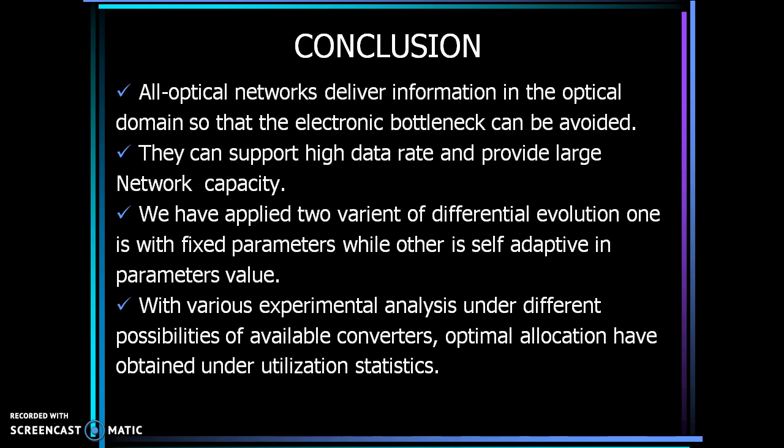In this work, we focus on the problem of assigning the wavelength converter over different nodes having different traffic conditions. To maximize performance, it is necessary to allocate wavelength converters to the network nodes optimally. In this approach, utilization statistics of wavelength converters are collected from computer simulations, and then optimization algorithms are designed to allocate wavelength converters.